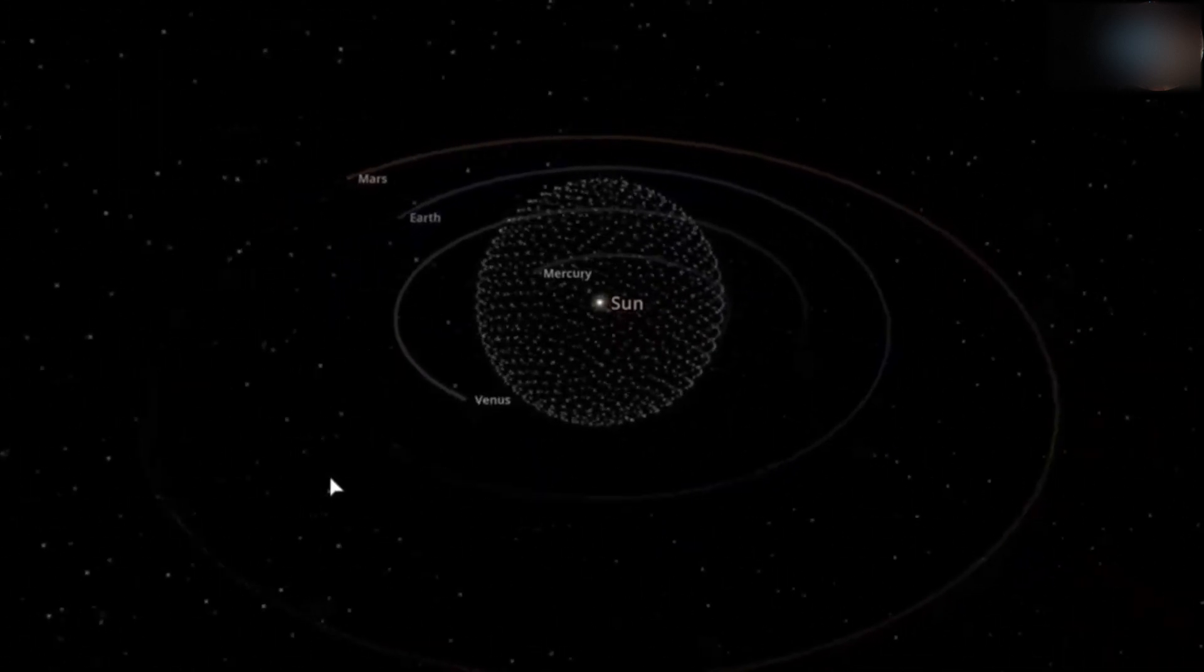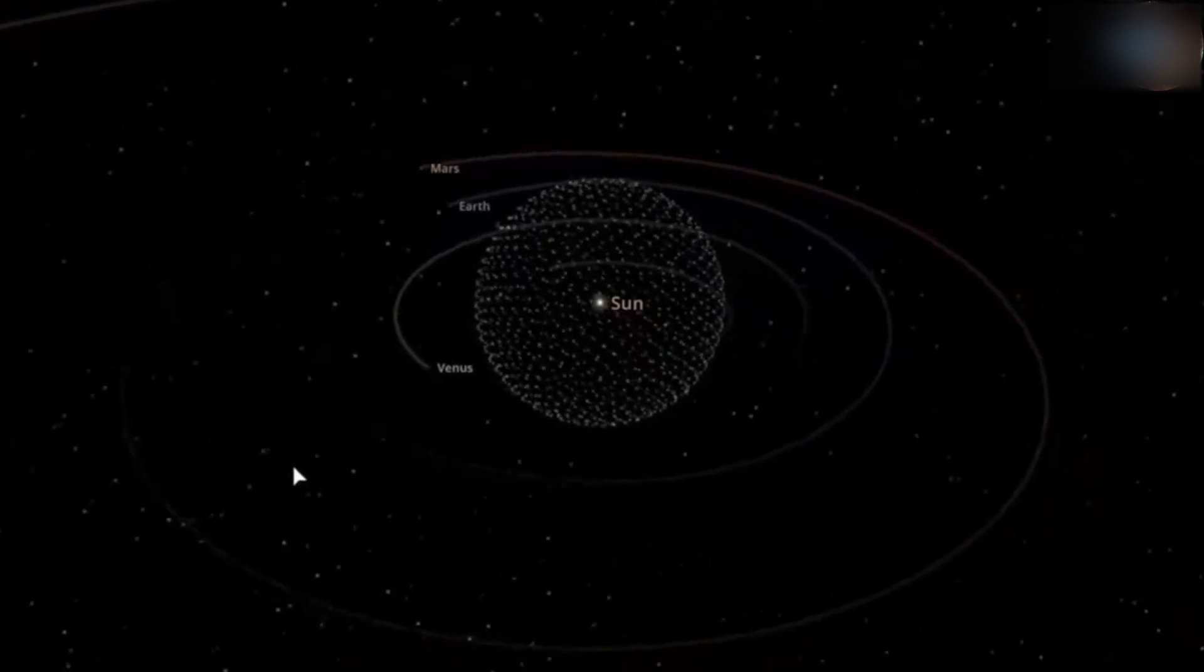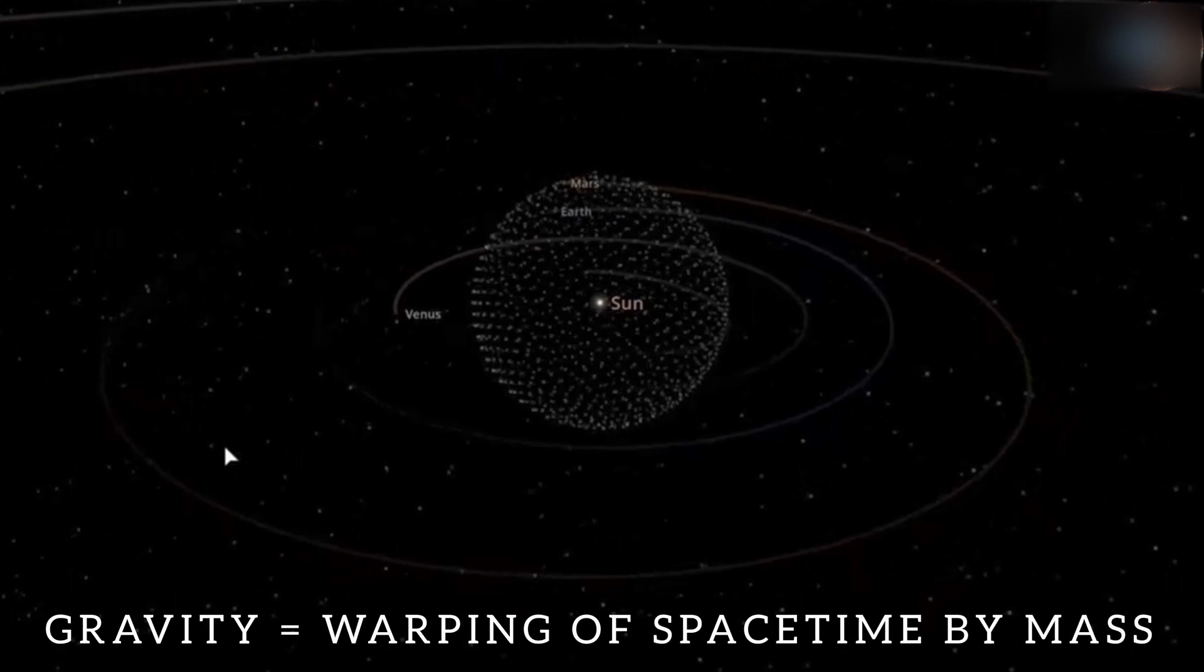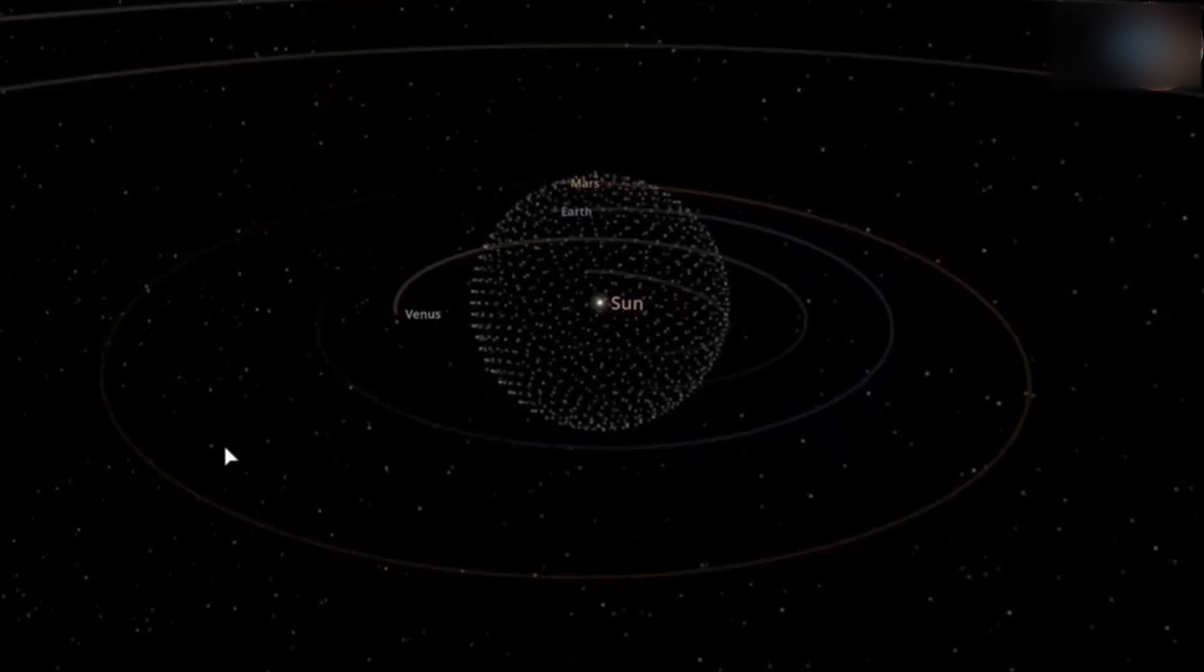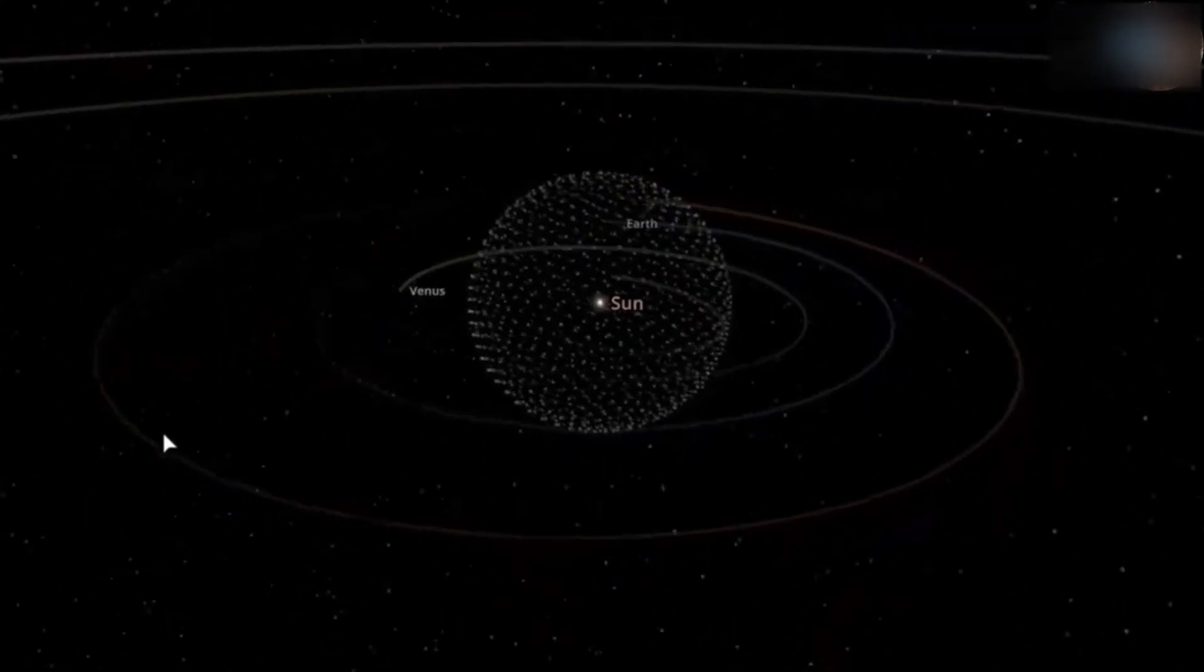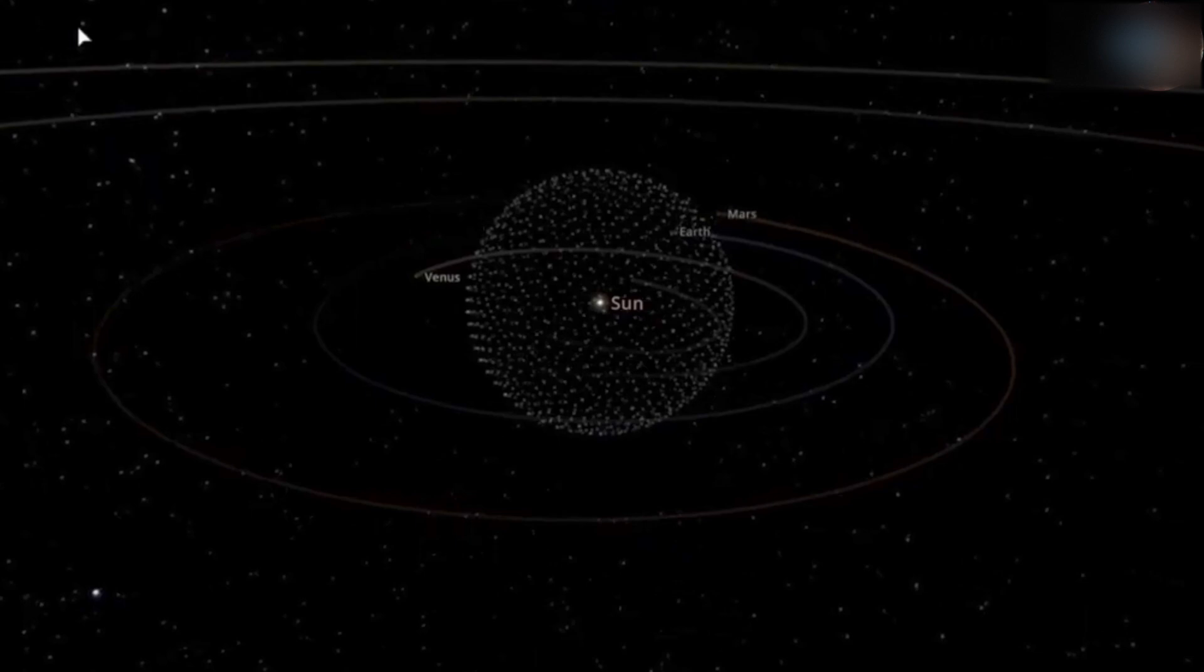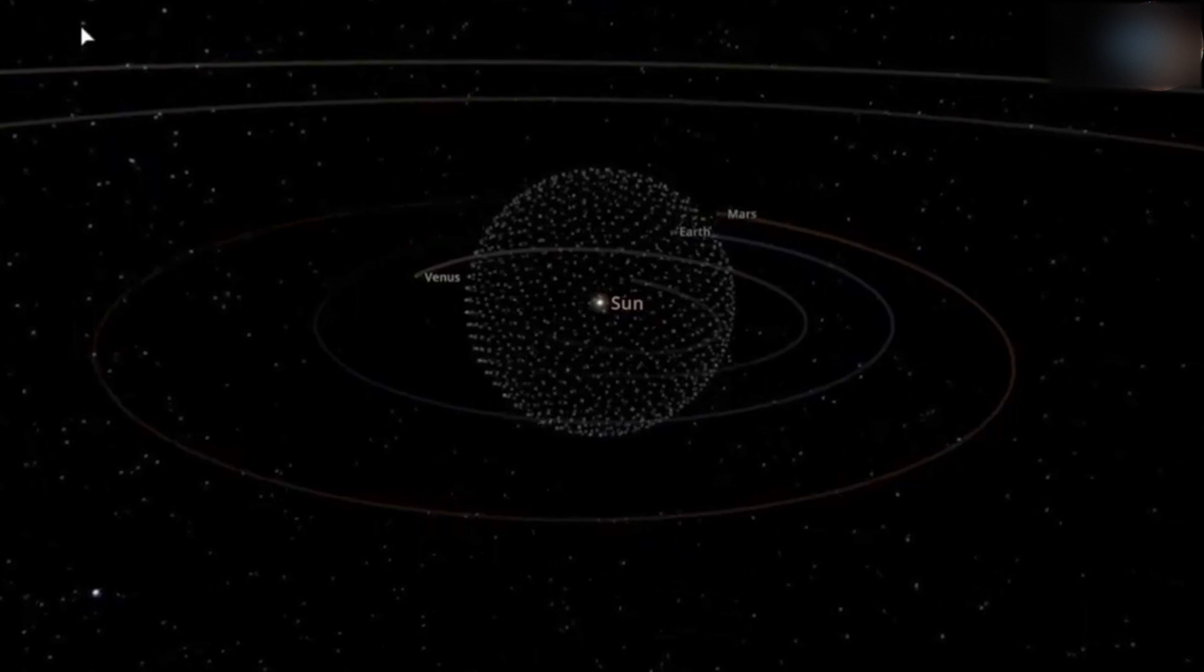Einstein's theory of general relativity expanded on the special theory by describing gravity as the warping of space-time by mass. The speed of light remains a constant, even in the presence of massive objects like stars and black holes. It's this framework that has allowed scientists to make accurate predictions about the behavior of light in gravitational fields.